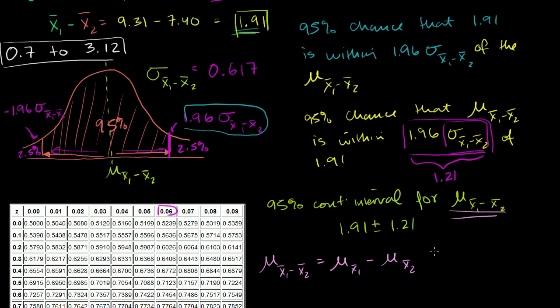And we know that the mean of each of the sampling distributions is actually the same as the mean of the population distributions. So this is the same thing as the mean of population 1 minus the mean of population 2. And this was the neat result about the last video. So this isn't just a 95% confidence interval for this parameter right here.